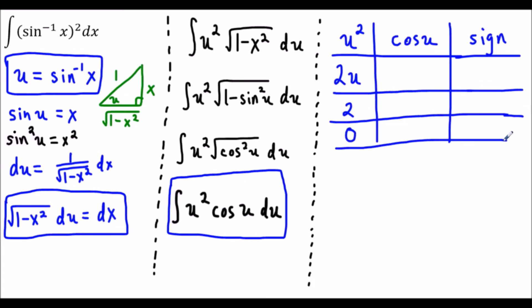We move to the next column and in this column we're going to take an anti-derivative. We keep doing that until we fill all these spaces. The anti-derivative of cosine is positive sine. The anti-derivative of sine u is negative cosine u. And the anti-derivative of negative cosine u is negative sine of u.